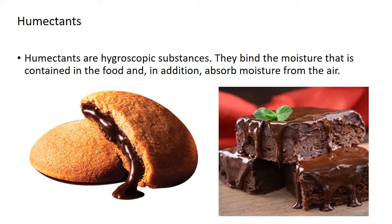Next we move on to humectants. Humectants are hygroscopic substances, which means they bind the moisture contained in the food and they also absorb moisture from the air. Their hygroscopic property prevents foods from drying out and also stops the sugar contained in confectionery from crystallizing. Thus they have a moisture-controlling effect.